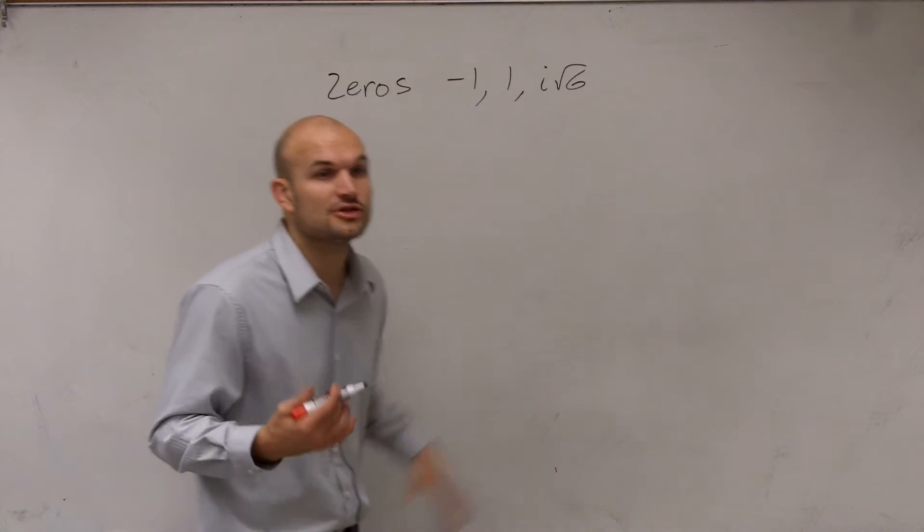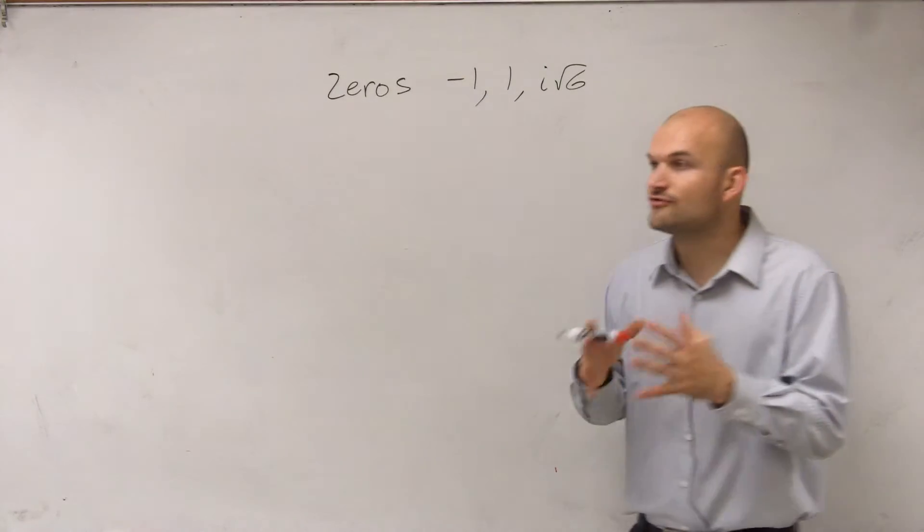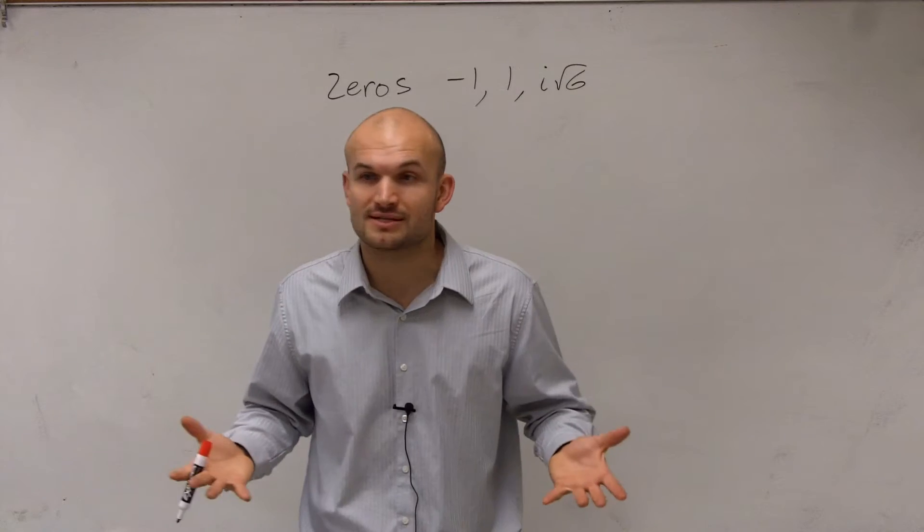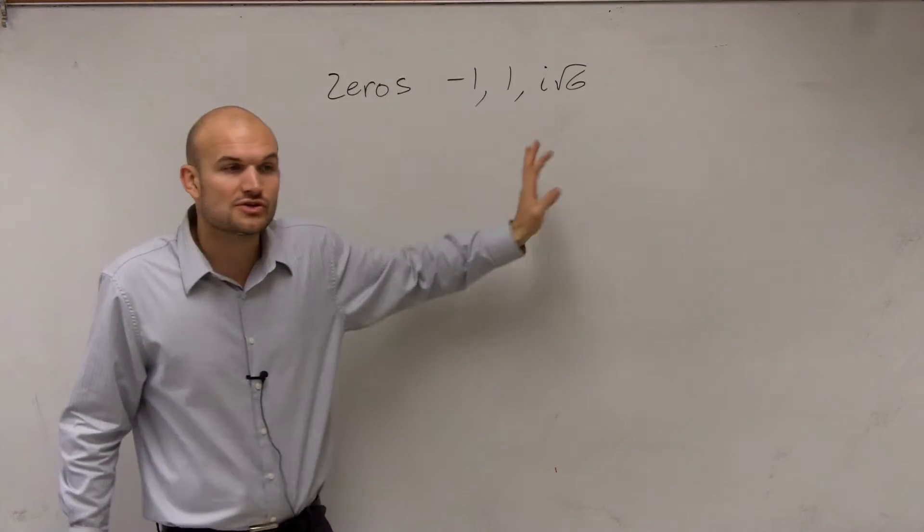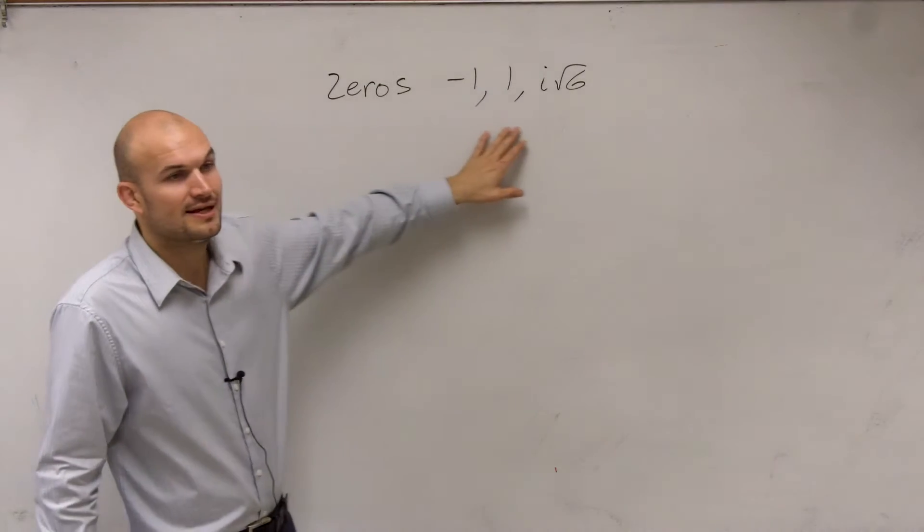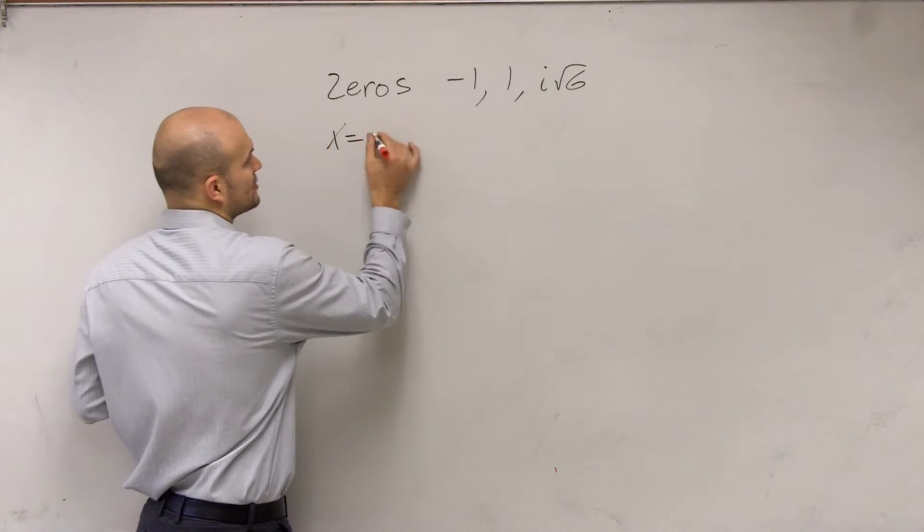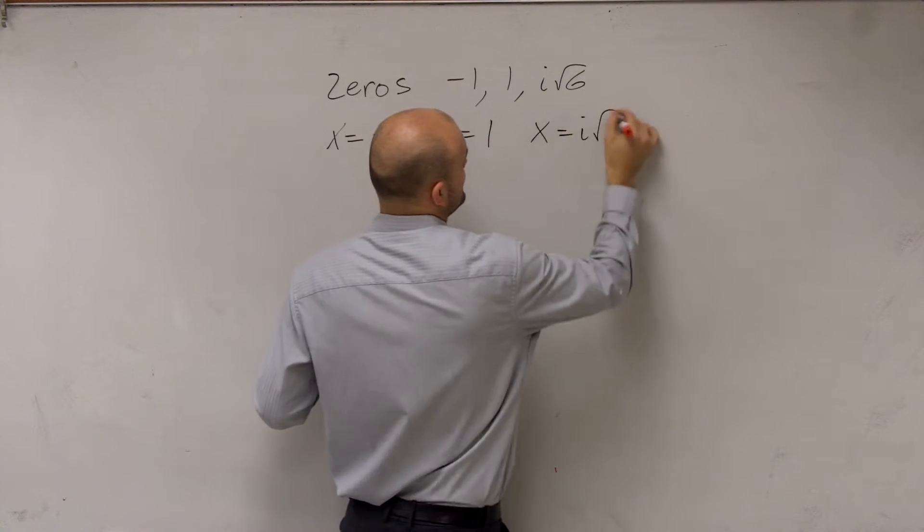So the main important thing, guys, is these are your zeros. Remember, these are what make your function equal to 0. But the thing is, we don't know what the function is. We don't know what the polynomial is. All we know is that these are your zeros. These are your x-intercepts of the graph. So the first thing I need to do is, I know that these are your x-intercepts. So therefore, I can set x equals negative 1, x equals 1, and x equals i square root of 6.